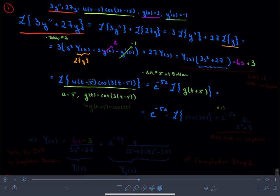Well, if g of t is equal to cosine of 3 times quantity t minus 5, g of t plus 5 is equal to the cosine of 3t.